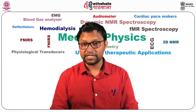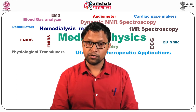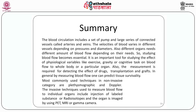We have come towards the end of the module. To summarize: the blood circulation includes the heart and a large series of connected vessels called arteries and veins. The velocity of blood varies in different vessels depending on pressures and diameters. Different organs need different amounts of blood flow depending on their needs, so studying blood flow becomes essential. It is an important tool for studying the effect of physiological variables like exercise, gravity, or cognitive tasks on blood flow to the whole body or a particular organ. The measurement is also required for detecting the effect of drugs, transplantation, and grafts.